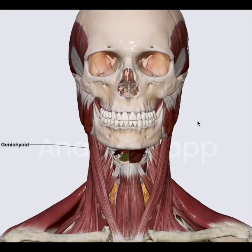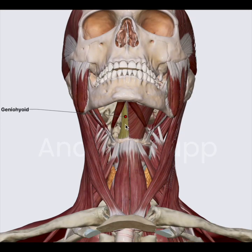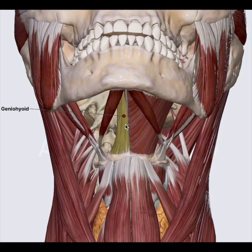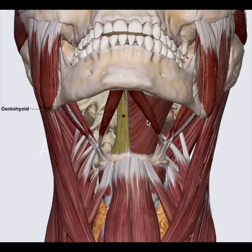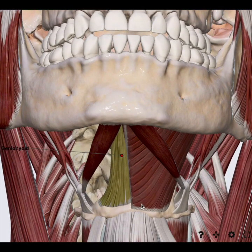The next muscle is the geniohyoid, which is hidden well inside. This is a very short muscle that arises from the inferior mental spine and runs posterior-inferiorly, inserting on the superior border of the hyoid bone. It is supplied by C1 via the hypoglossal nerve. When the mandible is fixed, the muscle helps in elevating the hyoid bone. All these muscles have to be released while doing a laryngectomy — as one of the steps, we have to clear the superior border and free the hyoid.